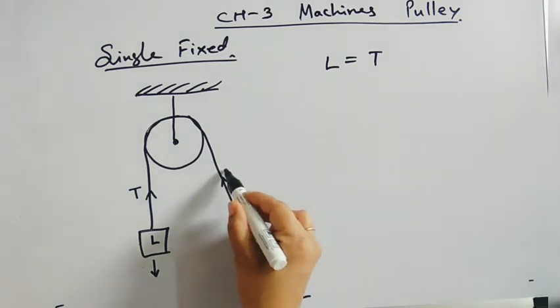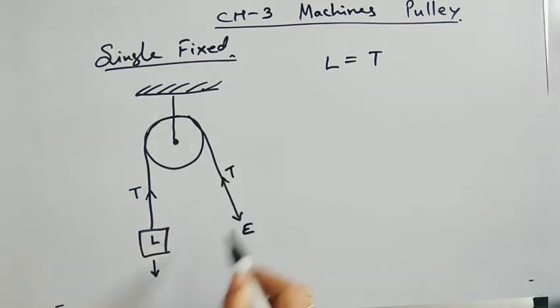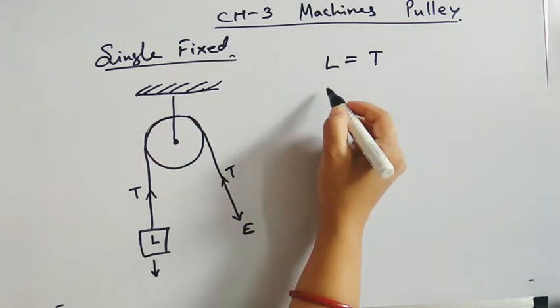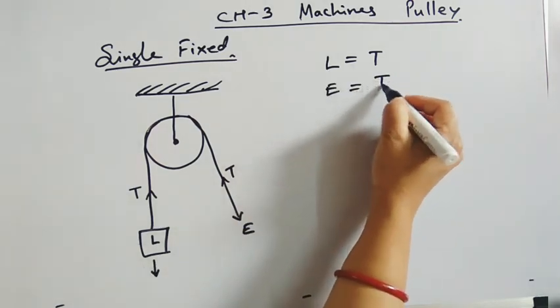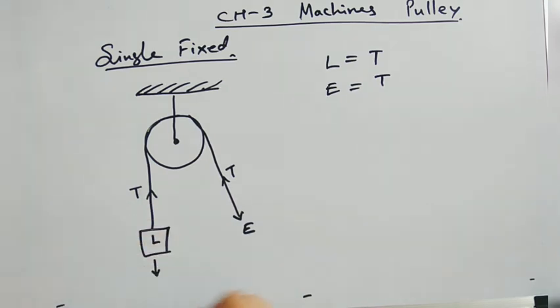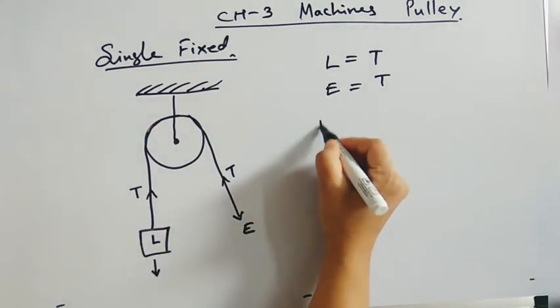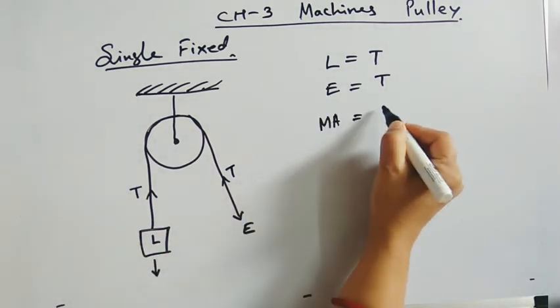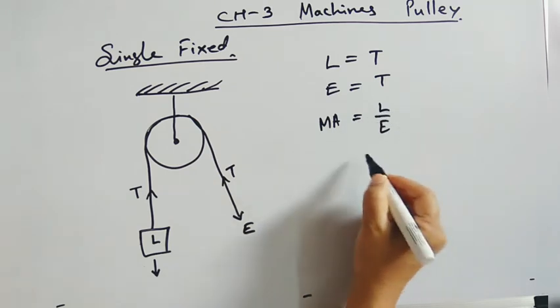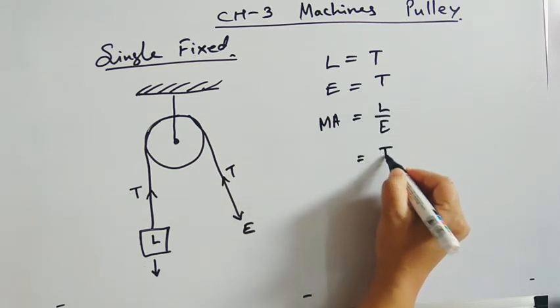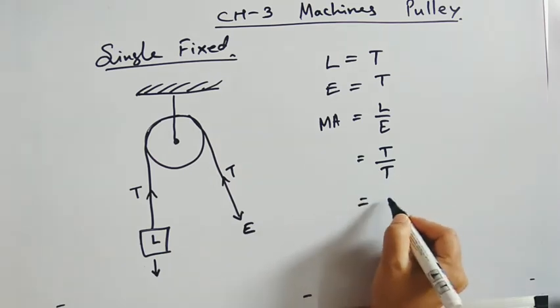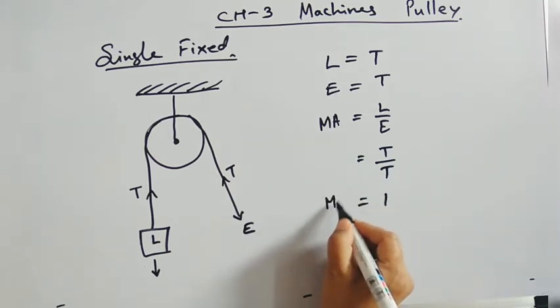So load and effort both are balanced by single T, means in both the strands. So now mechanical advantage of this pulley, which is equal to load upon effort, is equal to T upon T, which is equal to 1. So mechanical advantage of a single fixed pulley is 1.